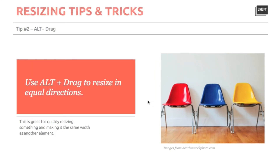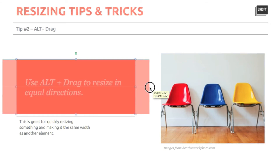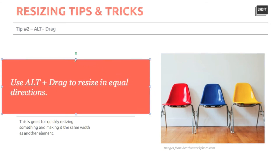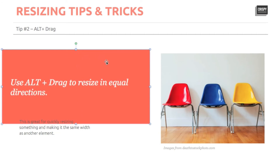Tip number two: similarly, to resize an object equally in any direction, hold down the alt key on your keyboard, then drag to resize from anywhere on the shape. This is great for saving yourself a step or two when making an object bigger or smaller.